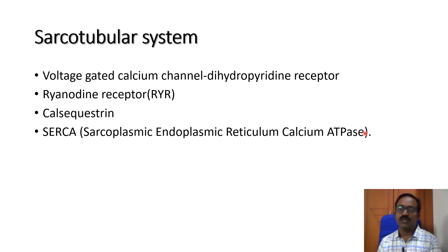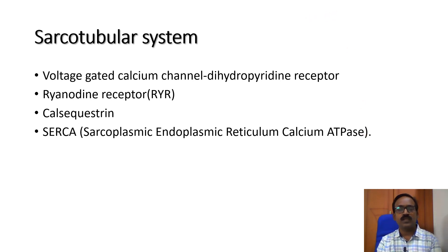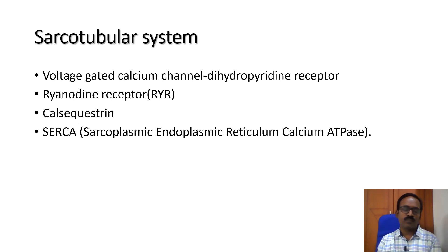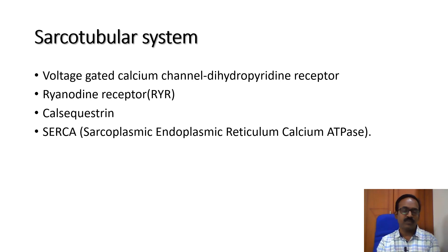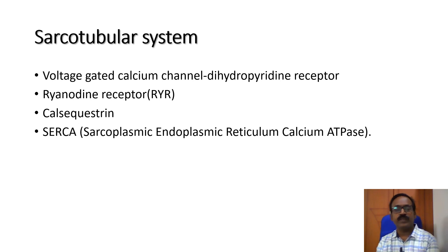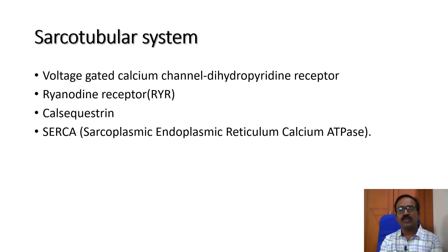The functions of the sarcotubular system are: it is important for the action potential — it transfers the action potential from the sarcolemma to the interior. It raises the cytoplasmic calcium concentration by calcium released from the sarcoplasmic reticulum. It also ensures muscle relaxation by calcium reuptake via the sarcoplasmic endoplasmic reticulum calcium ATPase. The sarcoplasmic reticulum also acts as a storage site for calcium.